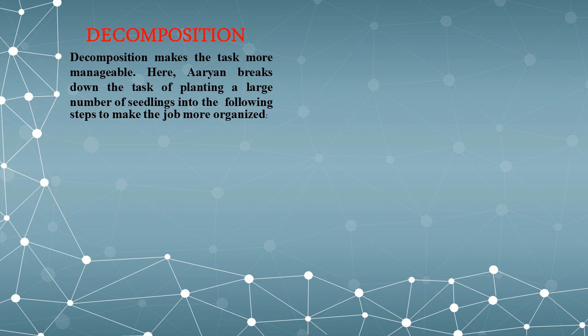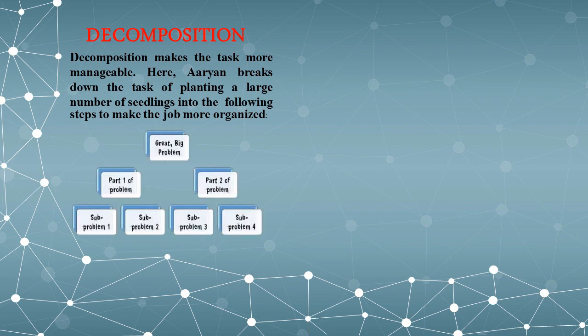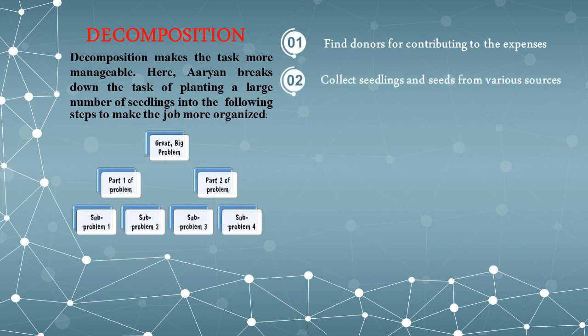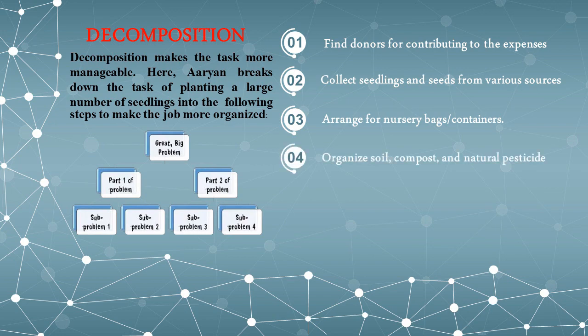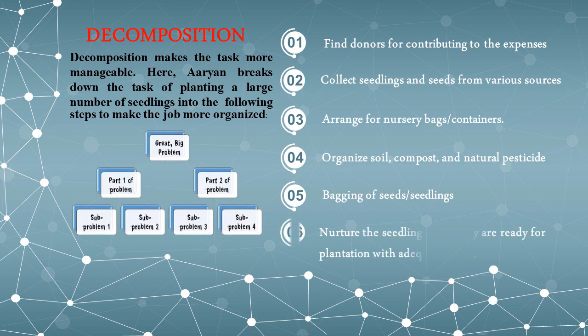The second component is decomposition. Decomposition makes the task more manageable. Aryan breaks down the task of planting a large number of seedlings into the following steps: 1. Find donors for contributing to the expenses. 2. Collect seedlings and seeds from various sources such as nurseries or fertilizer shops. 3. Arrange for nursery bags and containers for preserving the seeds. 4. Organize soil, compost, and natural pesticides. 5. Bag the seeds and seedlings properly. 6. Nurture the seeds until they are ready for plantation with adequate water.